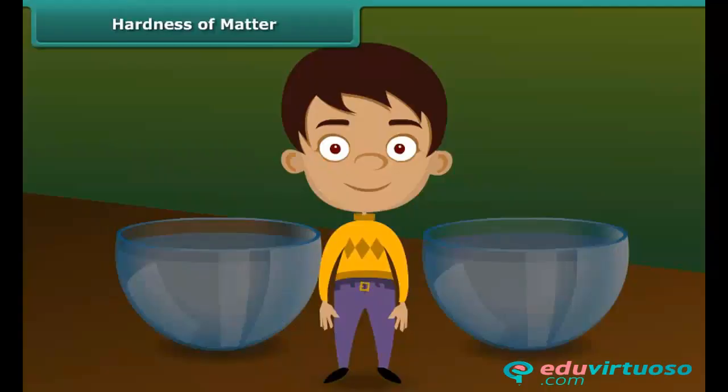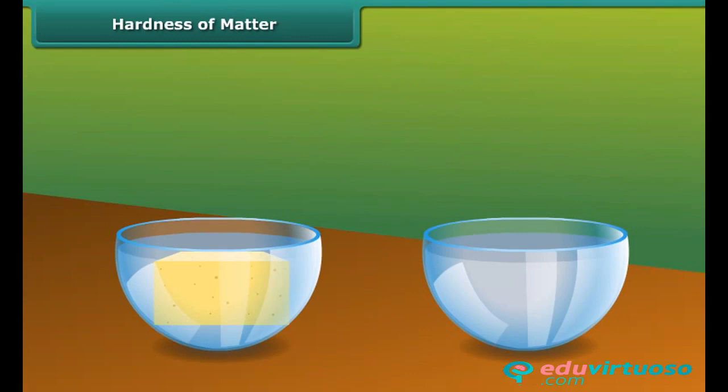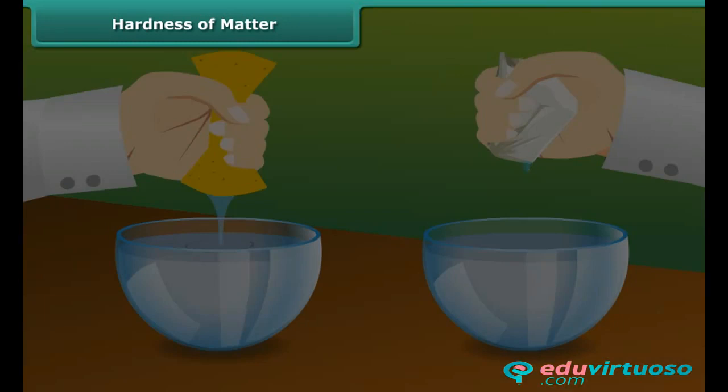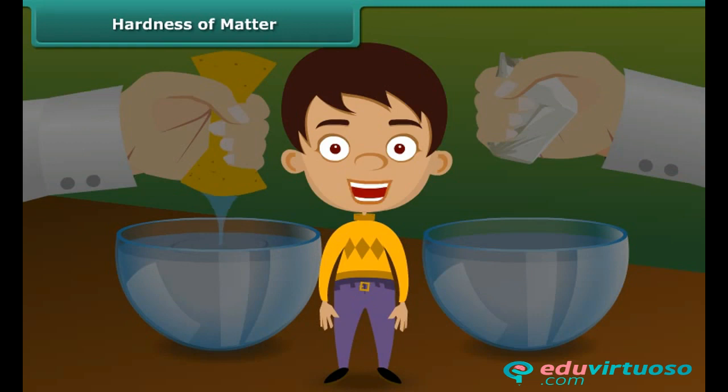Let us perform a small activity to understand the concept of hardness or softness of material. Take a sponge soaked in water. Now take a stone drenched in water. Try to squeeze both to remove water. Which of the two are you able to squeeze? Of course, the sponge.